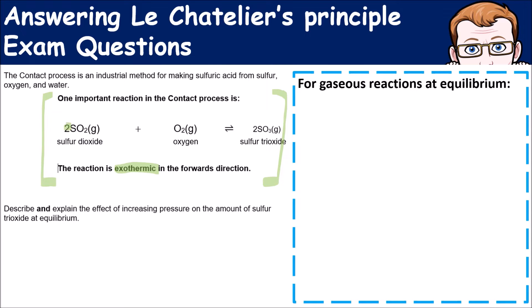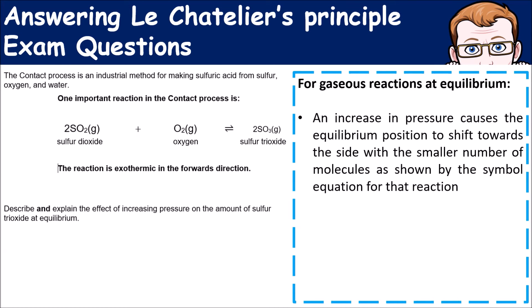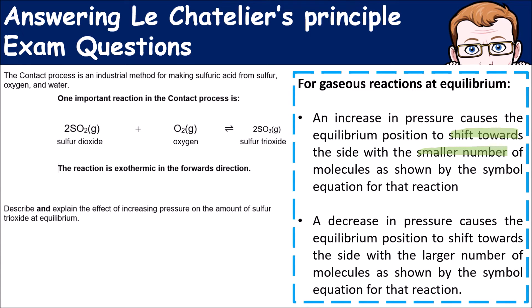It also tells you the amount of molecules on each side. The first bit says describe and explain the effect of increasing pressure on the amount of sulfur trioxide at equilibrium. Remember, sulfur trioxide is what we're making. If we look at the effect of increasing gas pressure: increasing pressure causes the equilibrium position to shift towards the side with the smaller number of molecules as shown by symbols in the equation. Decreasing pressure causes the equilibrium position to shift to the side with the larger number of molecules.